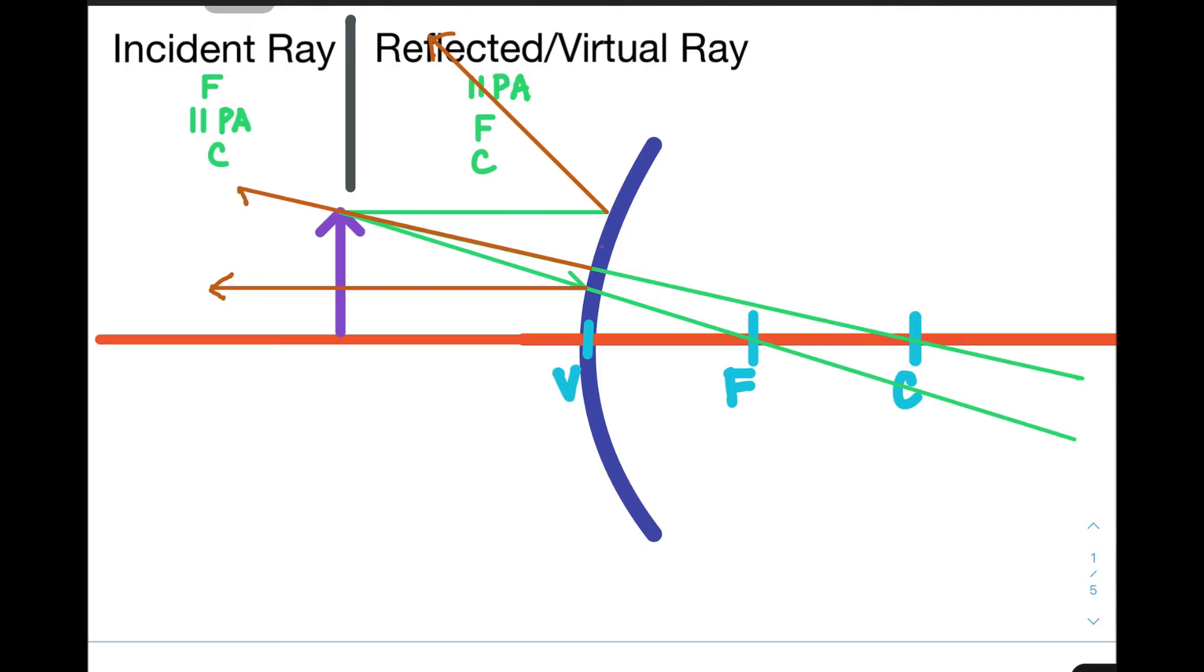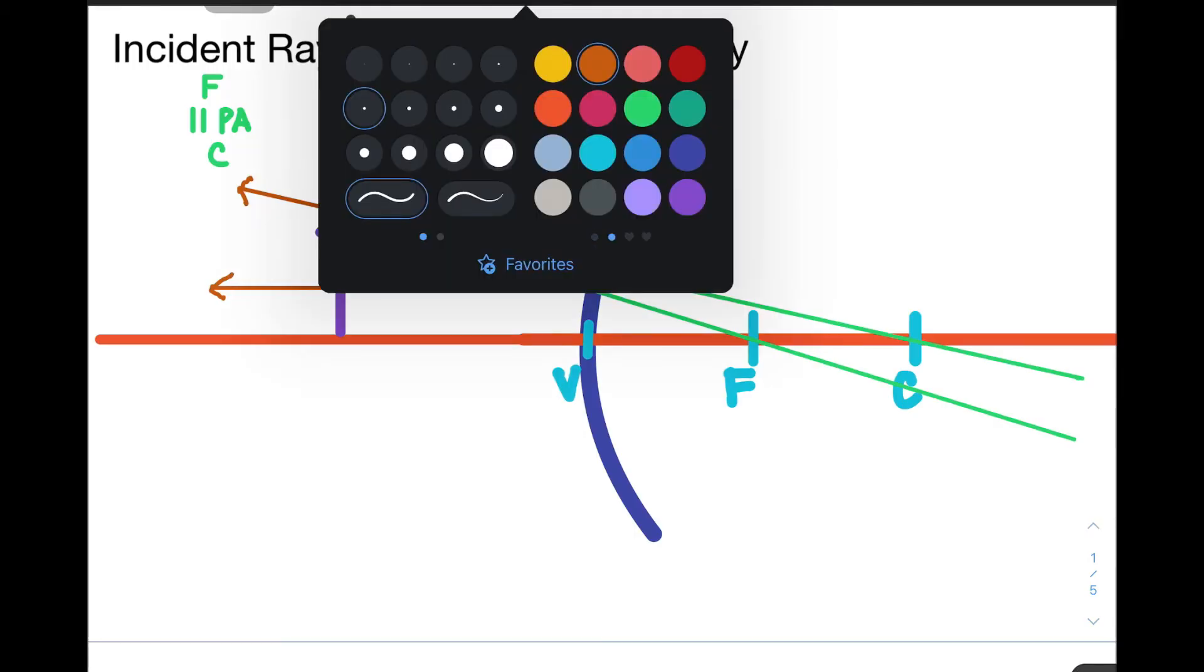Now, notice that the reflected rays, even if you extend them, they would not intersect. So, what should we do in this case? We should draw a line opposite of the reflected ray, which is called the virtual ray. Usually, the virtual ray is represented by a broken line because these are non-existent light beams that are just images shown in front of the mirror. I'm going to show it as purple and as a broken line.